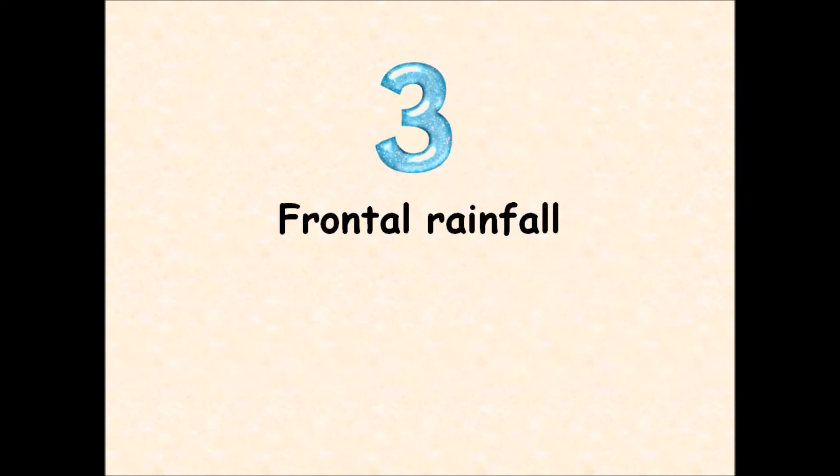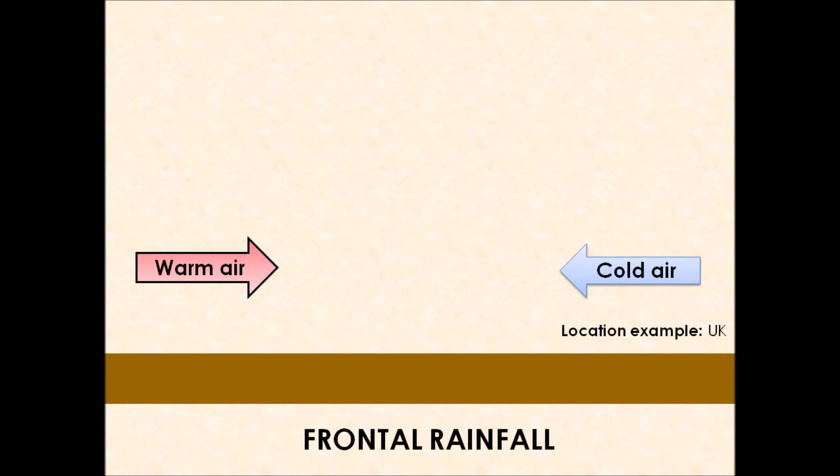Moving on to our third and final type of rainfall. This type of rainfall is known as frontal rainfall. This is a very typical type of rainfall that we get in the United Kingdom. This type of rainfall involves what we call air masses. You need to imagine that we have two large areas of air moving towards each other. On the left-hand side of the screen, you can see this warm air, and on the right-hand side of the screen, you can see this cold air. They're what we call air masses. For frontal rainfall, eventually, these two air masses will meet.